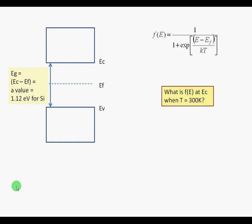First, find the location of the energy where you are evaluating F of E. In this case, F of E is to be evaluated at E sub C. This is the bottom of the conduction band.